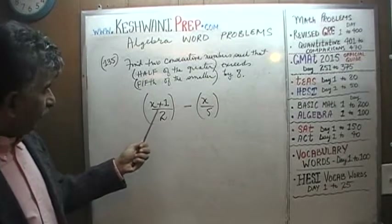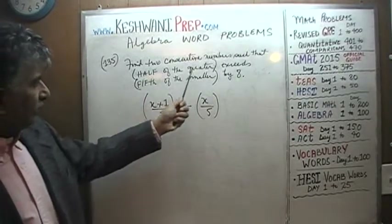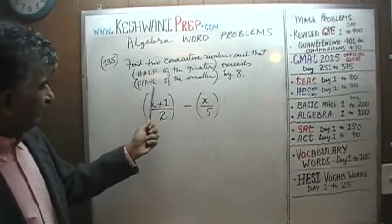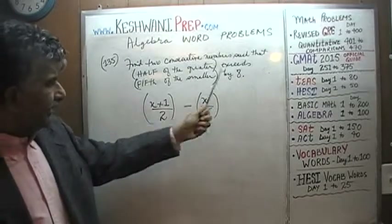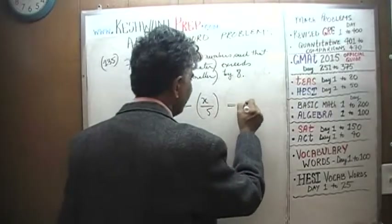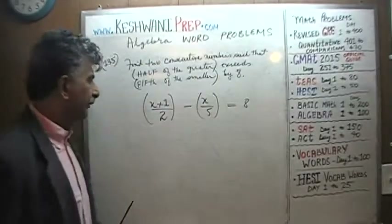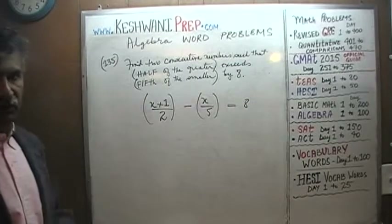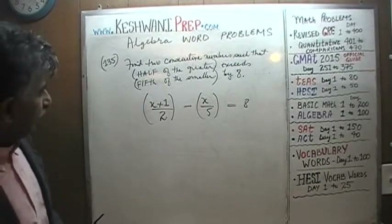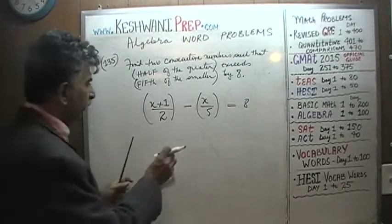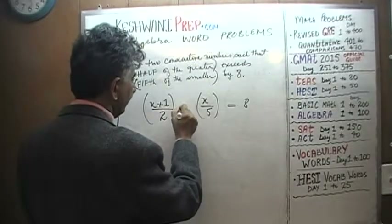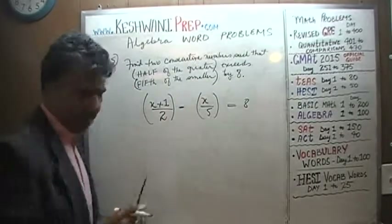Again, half of the greater one exceeds the fifth of the smaller one by eight. In other words, the difference between the two quantities is eight. And that's all there is. We just have to simplify it. I'm going to move this equal sign a little bit to the side here, and you will see in a second why.